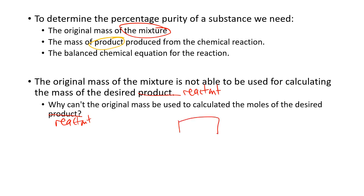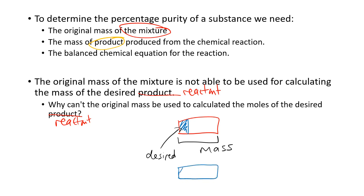Why can't the original mass be used to calculate the mass of the desired reactant? Here is our original mixture and here is our desired reactant inside it. If we were to use the mass of the whole thing to work out the number of moles of just this desired portion, we would think we had much more than we really do. So you can't just use the whole mass to work out the moles — otherwise that would give you way too much. The original mass cannot be used to calculate the moles of the desired reactant.